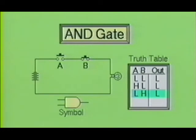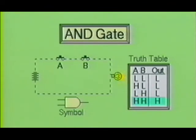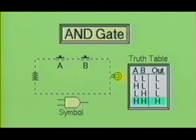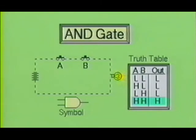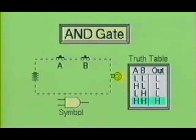Next, we will release the button on switch A and push in the button on switch B. Again, you will notice the lamp did not turn on. At this point, the truth table shows a low on A, a high on B, and a low at the output. Now suppose we push in switch A and switch B. When this happens, the lamp turns on. Our truth table now shows that a high on A and a high on B produces a high at the output. For the AND gate circuit to produce a high, the output had to have a high at both inputs A and B.